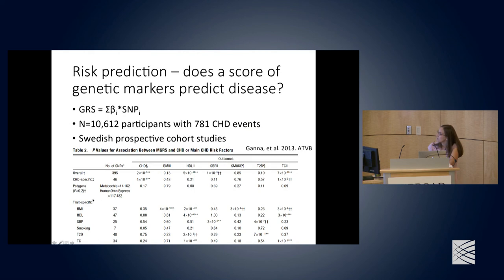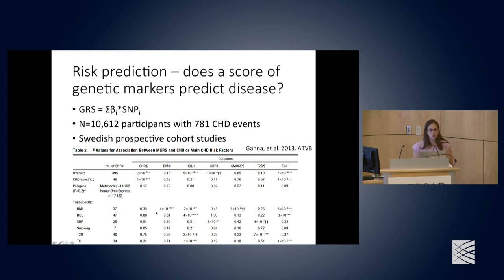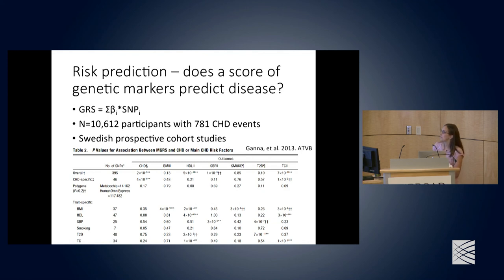Trait-specific genetic risk scores, where the SNPs are particular to a given trait such as BMI, will associate with that specific outcome. You can use genetic risk scores as a new independent variable and examine outcomes against these SNPs that have been associated with your trait in GWAS.